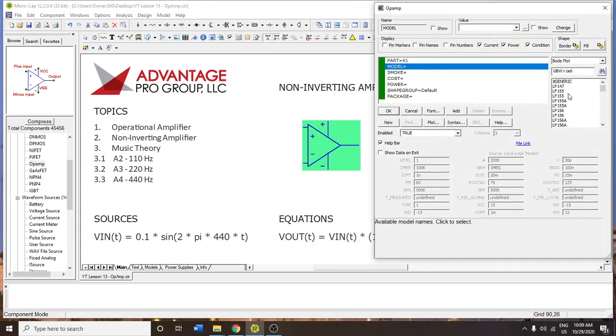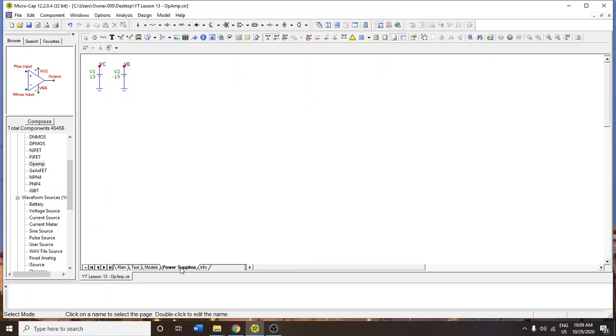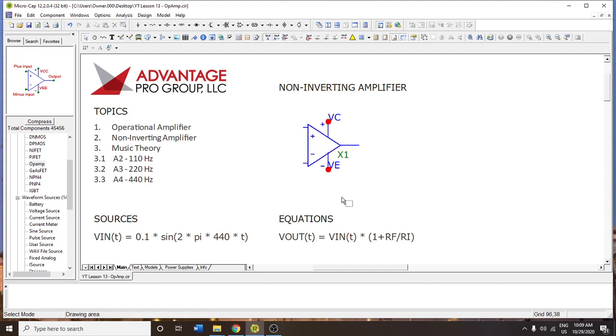We're going to put down an operational amplifier of an LF147 variety. You can choose any model you wish. It doesn't really matter as long as the bipolar supplies are connected. Microcap will add VC and VE, and you can check that in the power supplies tab that manifests as soon as you put down the part. You can change these values if you'd like, but 15 volts is enough for what we're doing.